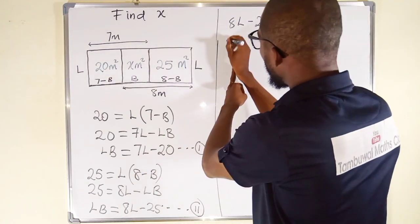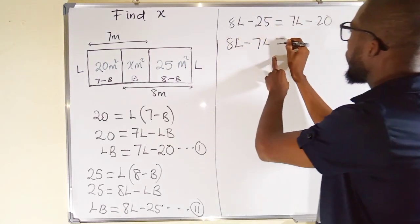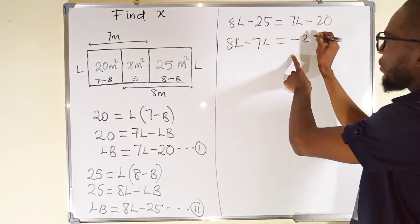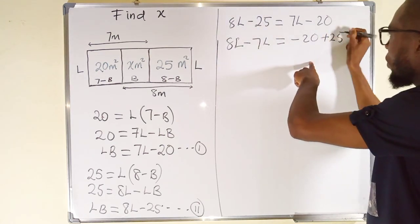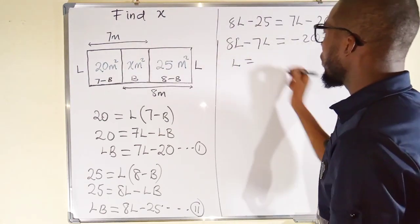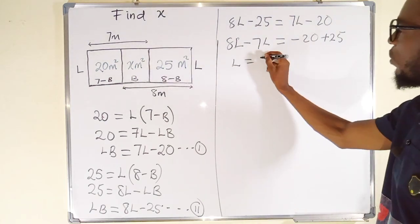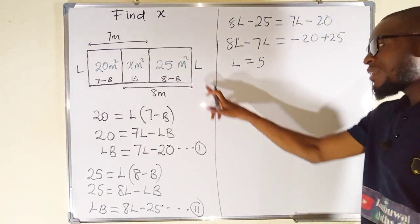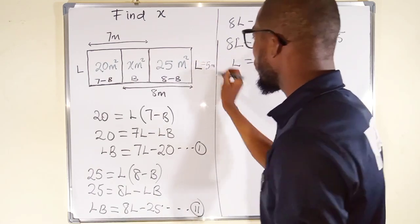7L to the left becomes negative. So, we have 8L minus 7L. This is equal to, we already have negative 20 here. This is negative. Coming to the right, it becomes positive 25. 8 minus 7 is 1. So, we have only L here. And to the right, we have negative 20 plus 25 which is exactly equal to 5. It means that this L here is nothing but 5 meter. This is 5 meter.